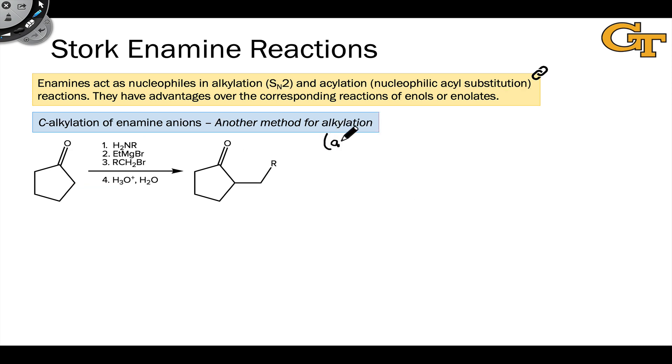One last example of a Stork enamine reaction involves alkylation. In theory, we should be able to use an alkyl halide together with an enamine to alkylate it to get an alpha-alkyl carbonyl compound at the end. However, this doesn't work great in practice with the neutral enamine.